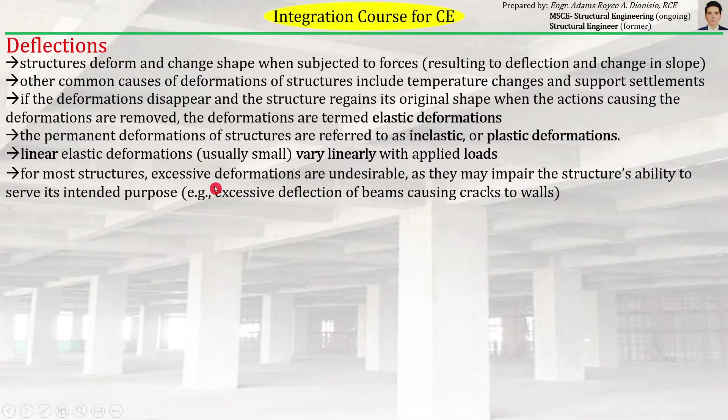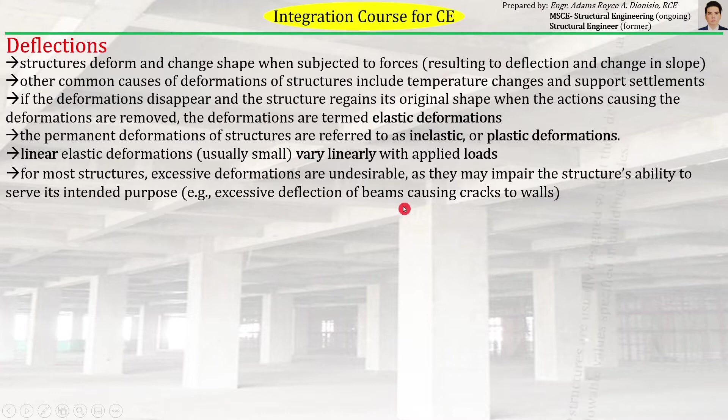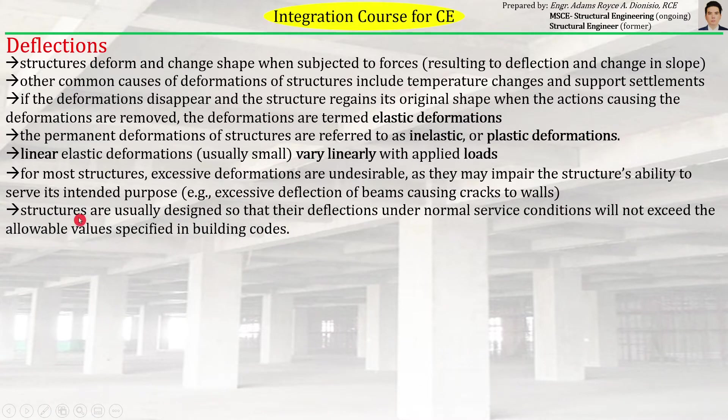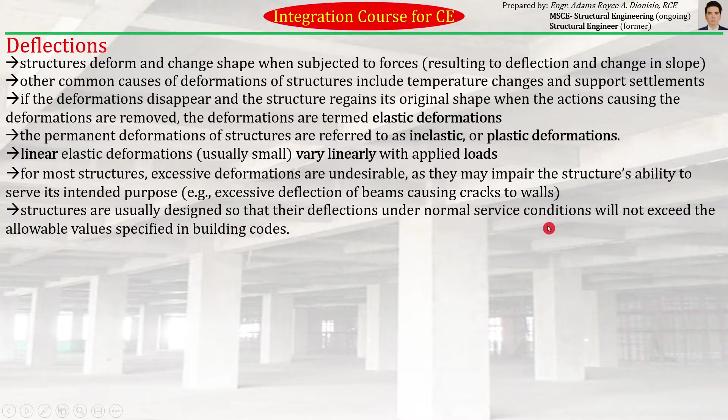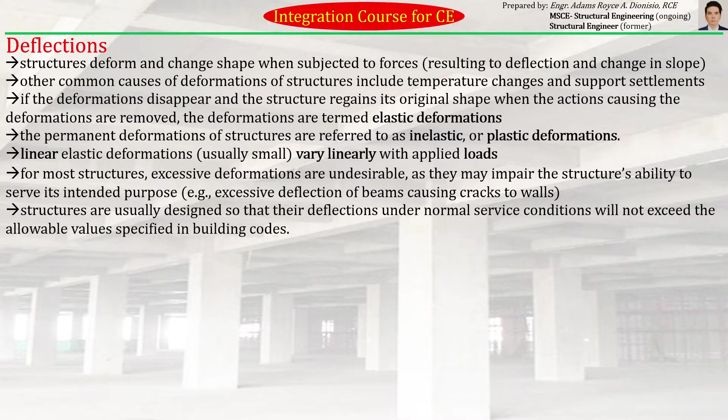For most structures, excessive deformations are undesirable as they may impair the structure's ability to serve its intended purpose, like excessive deflection of beams causing cracks to walls. Structures are usually designed so that their deflections under normal service conditions will not exceed the allowable values specified in building codes. There is a certain amount of deflection allowed by the code that must be complied by every structure for them to be code compliant.